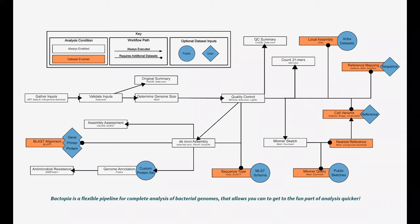Bactopia is a flexible pipeline built using Nextflow for the complete analysis of bacterial genomes. It includes many standard steps such as quality control, de novo assembly, and genome annotation. You can supplement your analysis with Bactopia datasets and take it further with Bactopia tools for comparative genome analyses, allowing you to get to the fun part of analysis much quicker.